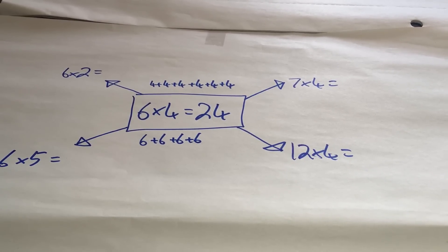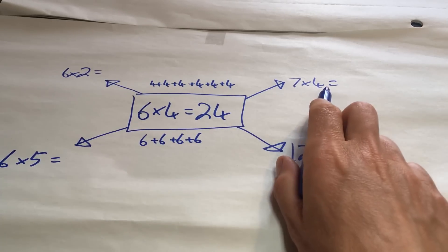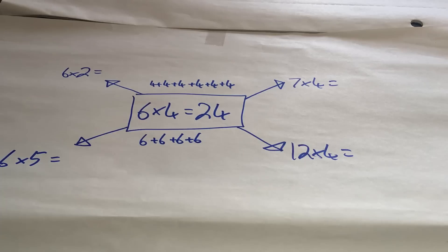Okay. Now, here are some calculations that relate to 6 times 4 equals 24. So, I've got 6 times 2, 7 times 4, 12 times 4 and 6 times 5. So, again, pause the video now. And two things. First of all, what are the answers to those questions? And secondly, most importantly, how do they link to 6 times 4 equals 24?